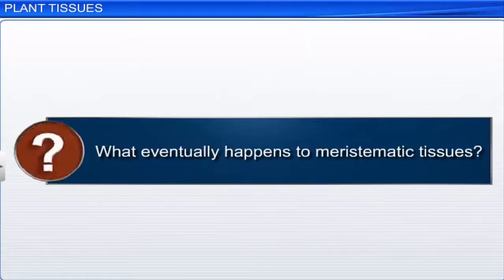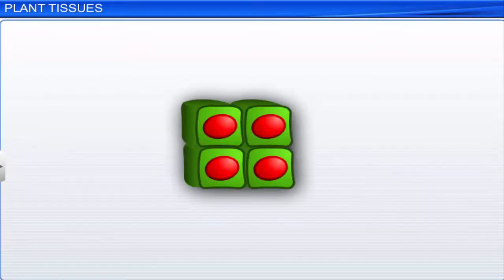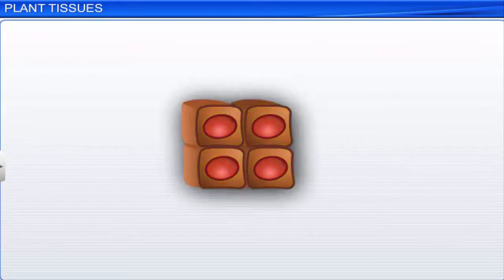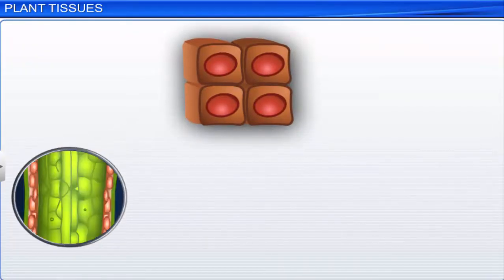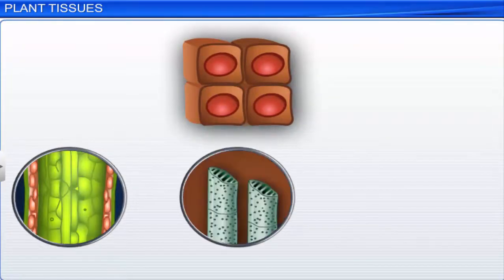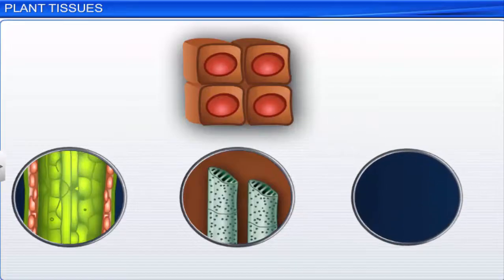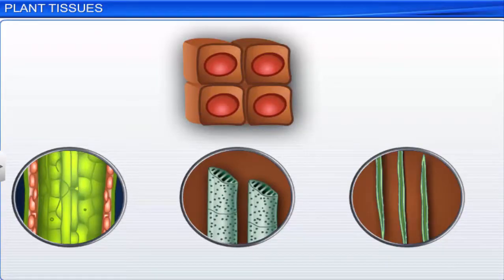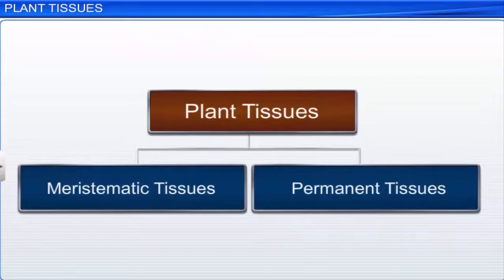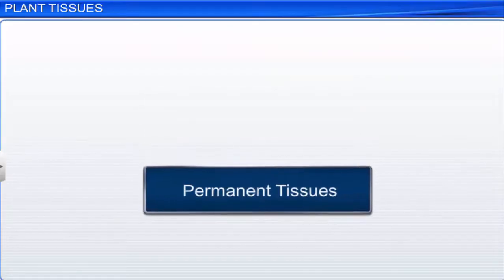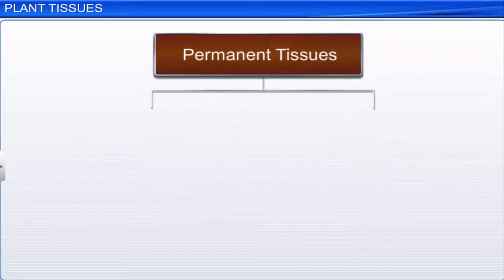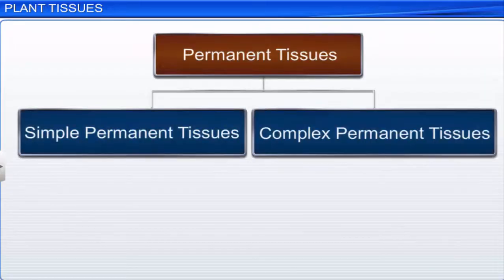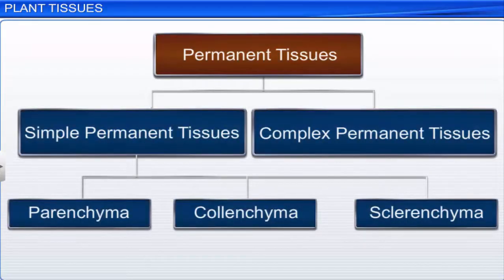Old meristematic cells lose the capacity to divide and transform into permanent tissues. This process of taking up a permanent shape, size, and function is called differentiation. Permanent tissues can be simple or complex depending upon their structure and function.